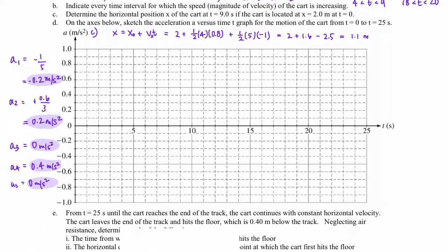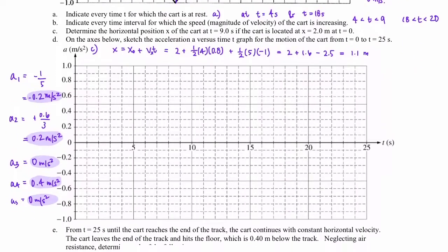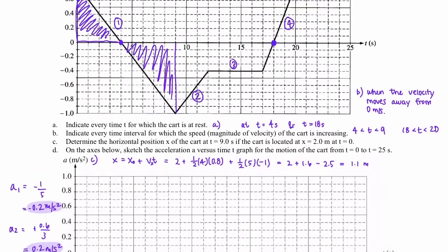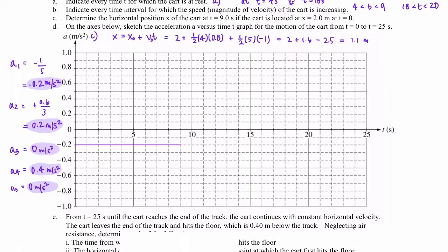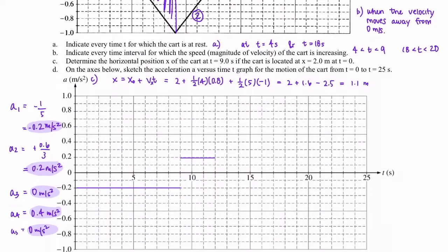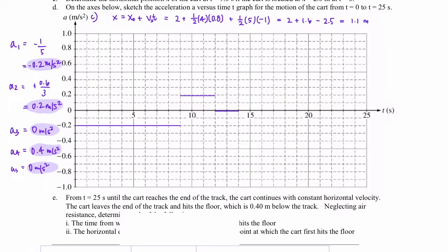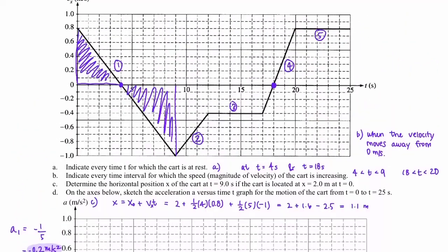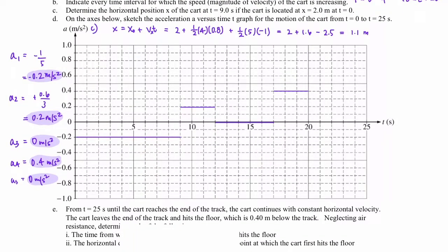Coming back to the acceleration versus time graph, we now plot each segment as a straight horizontal line for its duration. Segment 1 runs from 0 to 9 seconds at negative 0.2 m/s². From 9 to 12 seconds, we have positive 0.2 m/s². Segment 3 lasts 5 seconds at 0 m/s². Segment 4 lasts 3 seconds at 0.4 m/s². Finally, segment 5 lasts 5 seconds at 0 m/s².